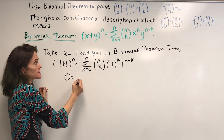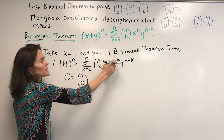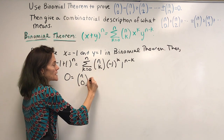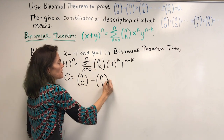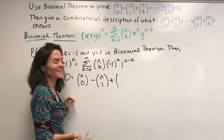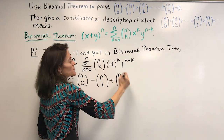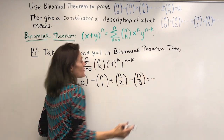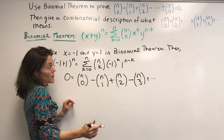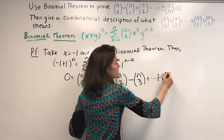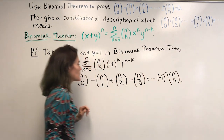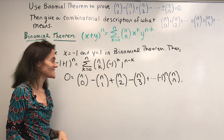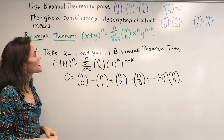Writing out terms: when k equals 0 we get n choose 0 times positive 1; when k equals 1 we get a negative 1 coefficient; when k equals 2, minus 1 squared is positive 1; when k equals 3 it's negative; and so on out to minus 1 to the n. This is exactly what we are trying to prove, so that part is finished. Now for a combinatorial description.